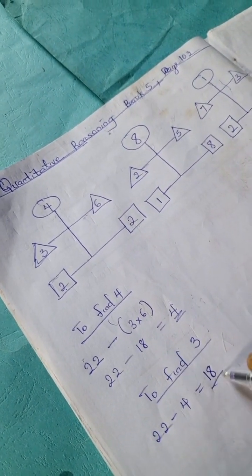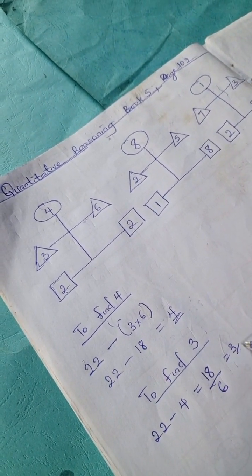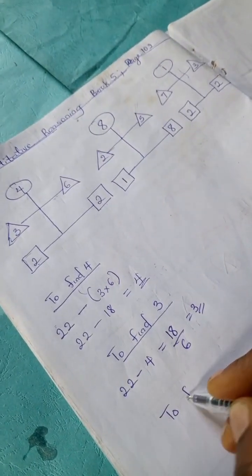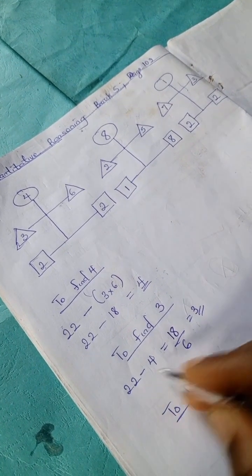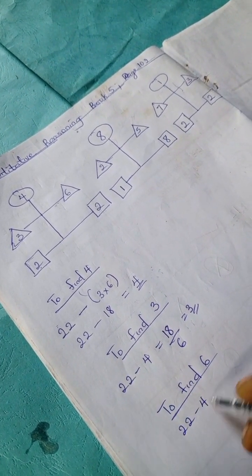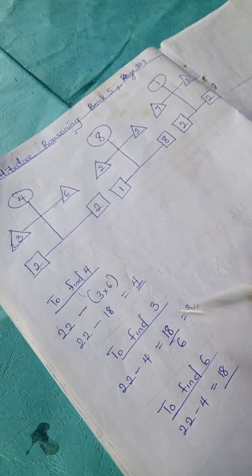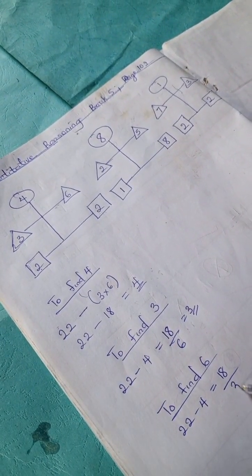18 divided by 6 is 3. Next we're going to find 6. We're going to do the same: 22 minus 4 is 18, and 18 divided by 3 is 6.